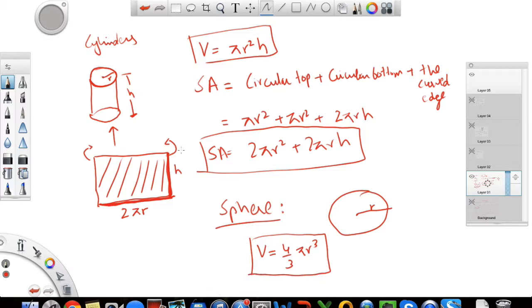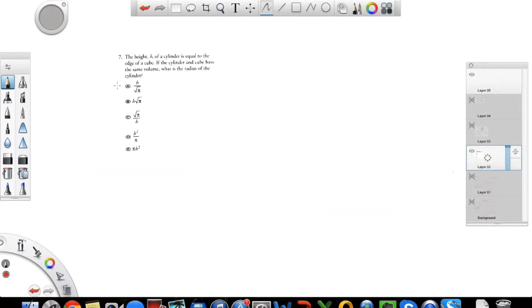So these are the three solid objects or solid things that you need to know for the GRE. So your rectangular solids, your cylinders, and your spheres. Alright, let's do a few problems on solid geometry.